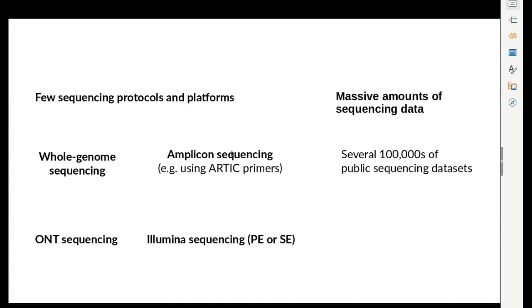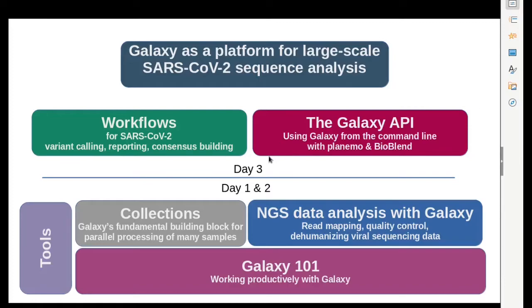The second characteristic is the sheer amount of SARS-CoV-2 sequencing data available. No other nucleic acid in history has been sequenced as obsessively as this tiny viral genome — by now there are several hundred thousands of sequencing datasets available through public databases, and that number keeps growing very rapidly every day. Combined, this relative uniformity of the data and its excessive amount really beg for automation. What we need is a robust, reproducible, and ideally agreed-upon way to analyze the information contained in all of this data.